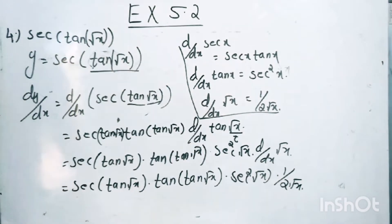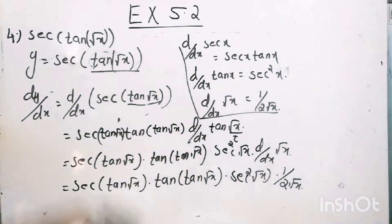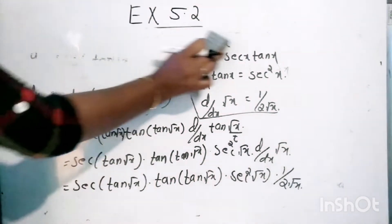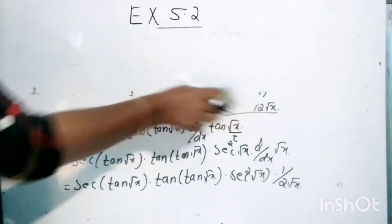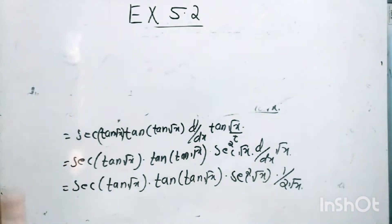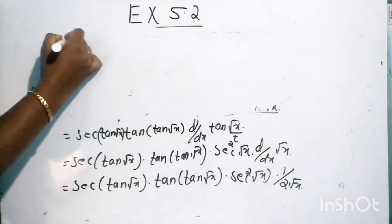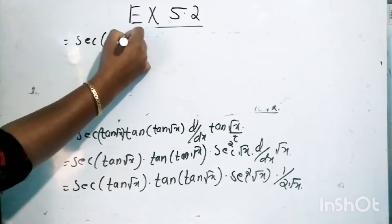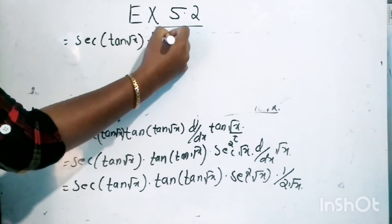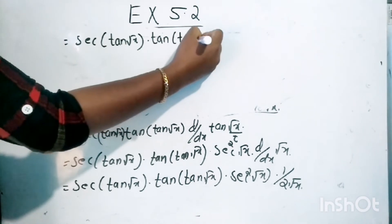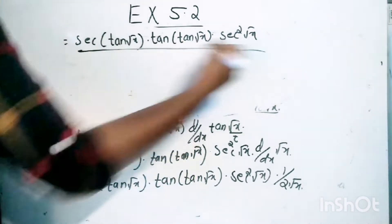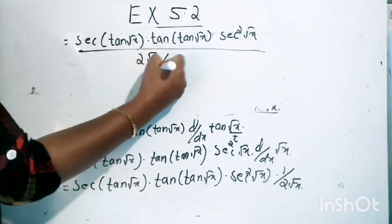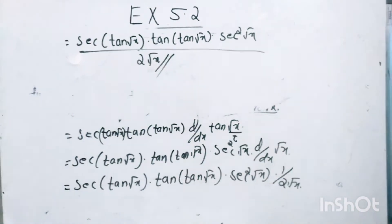So the final answer is cosec of tan root x into cot of tan root x into sec square root x all divided by 2 root x. This is the derivative of cosec of tan root x.